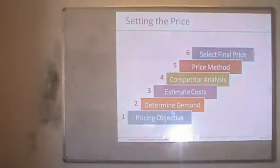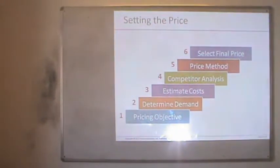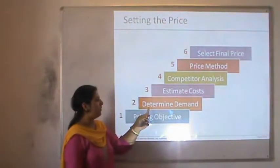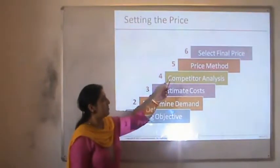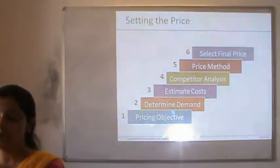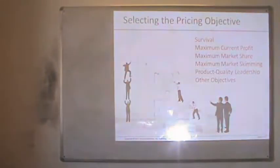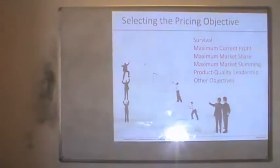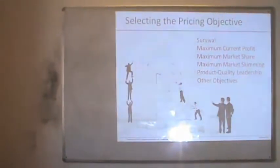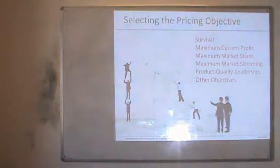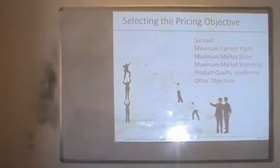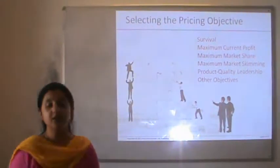The setting of pricing is a six-step procedure: determination of the pricing objective, finding out the demand level in the market, estimating costs, competitive analysis, selecting the pricing method, and evaluating and selecting the final pricing method. There can be a range of objectives — the company may be primarily looking for survival, maximizing profit, maximizing market share, skimming the market, establishing themselves as a product quality leader, or maintaining their share in the market. As the objective changes, so would the strategy adopted.